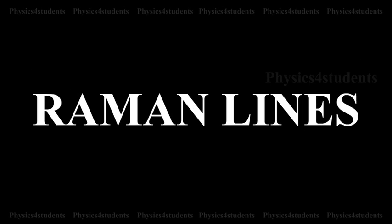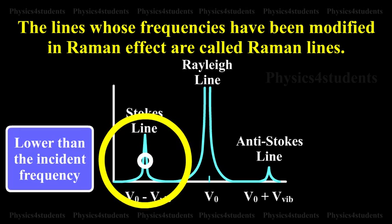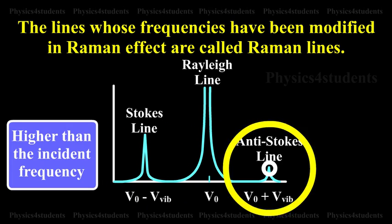Raman Lines. The lines whose frequencies have been modified in Raman Effect are called Raman Lines. The lines having frequencies lower than the incident frequency are called Stokes Lines, and the lines having frequencies higher than the incident frequency are called Anti-Stokes Lines.